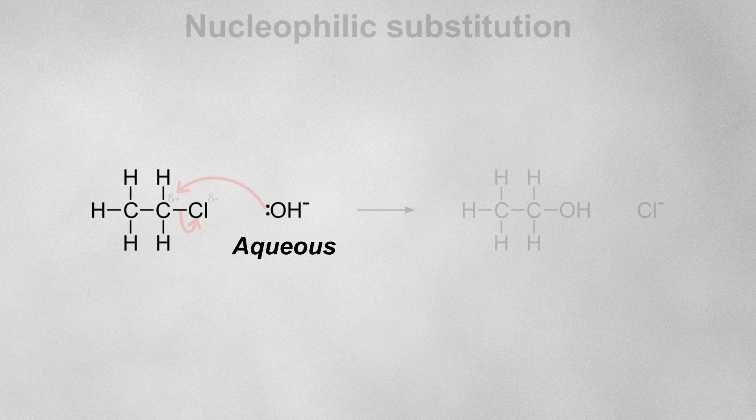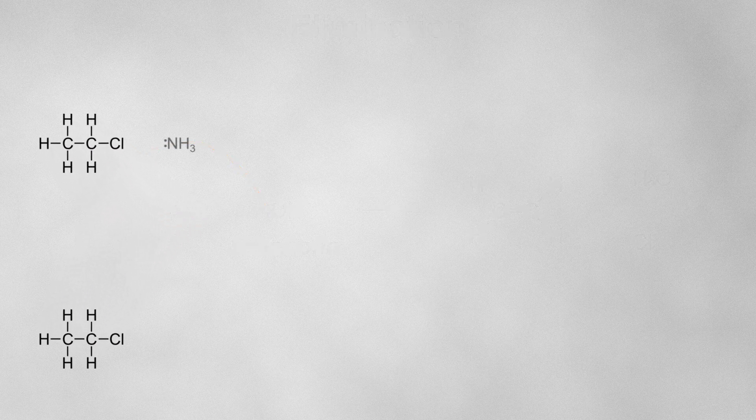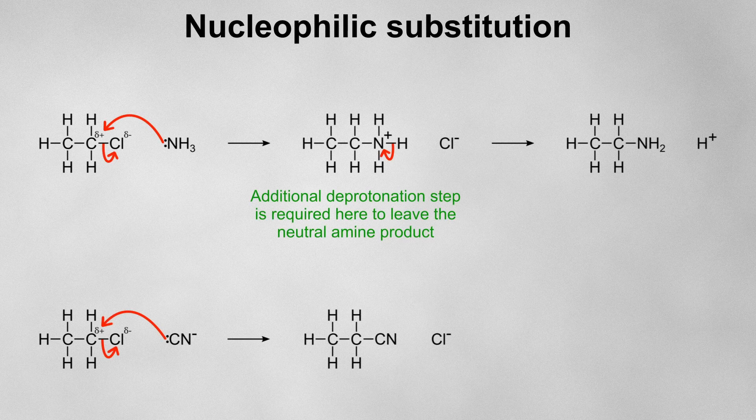If a halogen alkane is reacting, there are a couple of possibilities. If it's reacting with aqueous sodium hydroxide, there will be a nucleophilic substitution to form an alcohol. If it's reacting with ethanolic sodium hydroxide, there will be an elimination to form an alkene. A reaction between a halogen alkane and ammonia or cyanide will also result in a nucleophilic substitution.